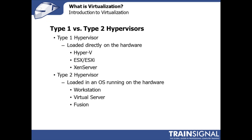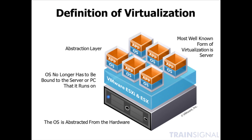I mentioned that one of those hypervisors runs on the Mac operating system, which sounds strange since I just said the hypervisor is loaded directly on the hardware. The confusion lies in the fact that there are two different types of hypervisors. A type 1 hypervisor is loaded directly on the hardware — that's the picture where you've got VMware ESXi or ESX loaded directly on the physical server.